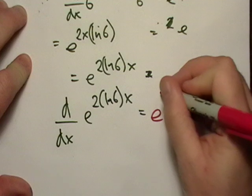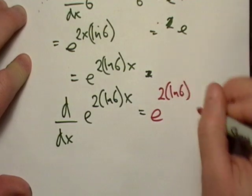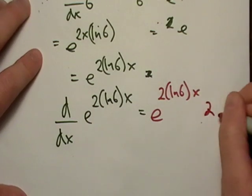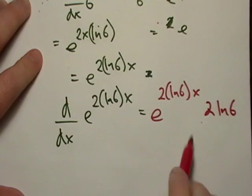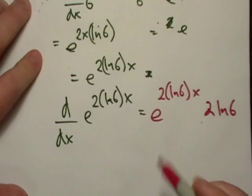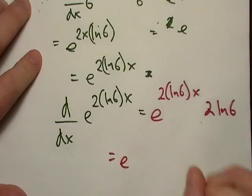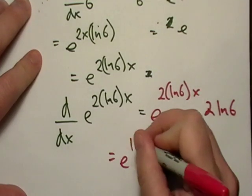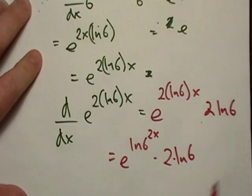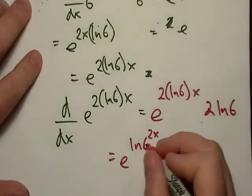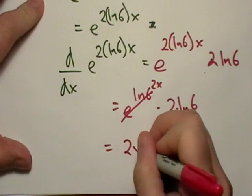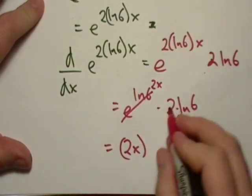that's just going to be e raised to the two natural log of six x, multiply that by, what's the derivative of the inside, two natural log of six. Did it all fit? Yes, it did. All right. So we know that two x is going to make its way back on top when we simplify this. So it'll be two x and we multiply that by two natural log of six. This will cancel out again right there.